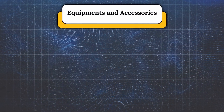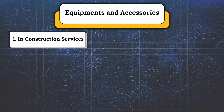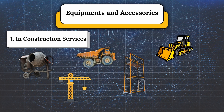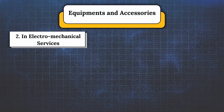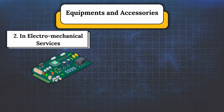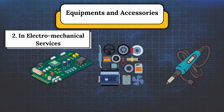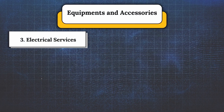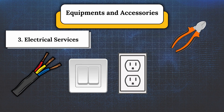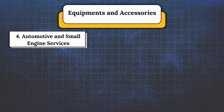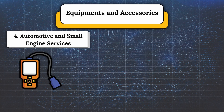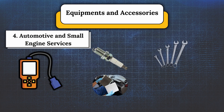For the equipment and accessories used in industrial arts services. Number one, in construction services — equipment and accessories could include concrete mixers and tools. Number three, in electrical services — it includes equipment and accessories such as wiring, switches, outlets, and tools such as soldering irons and voltage testers. Number four, in automotive and small engine services — equipment and accessories could include diagnostic tools such as OBD scanners, replacement parts such as spark plugs and filters, and maintenance tools such as wrenches and socket sets.